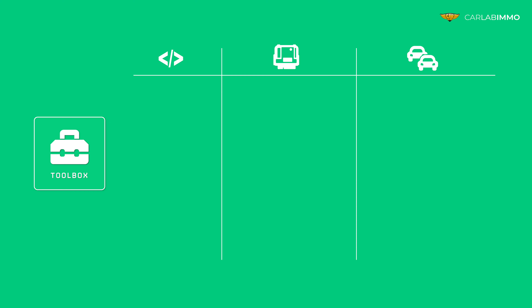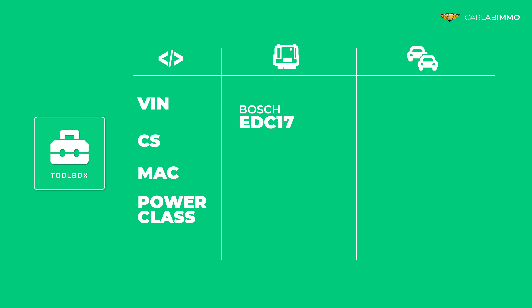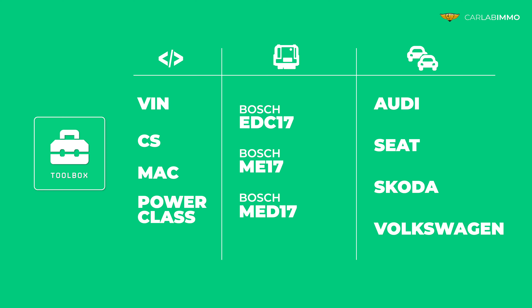Toolbox lets you calculate VIN, CS, MAC, and power class values in three types of Bosch engine control units: EDC-17, ME-17, and ME-D-17, that are commonly installed in VAG group vehicles.